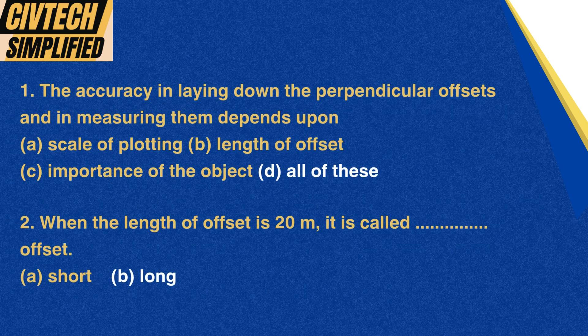Question 1: The accuracy in laying down the perpendicular offsets and in measuring them depends upon: A. Scale of plotting, B. Length of offset, C. Importance of the object, D. All of these. Correct option: D. All of these.